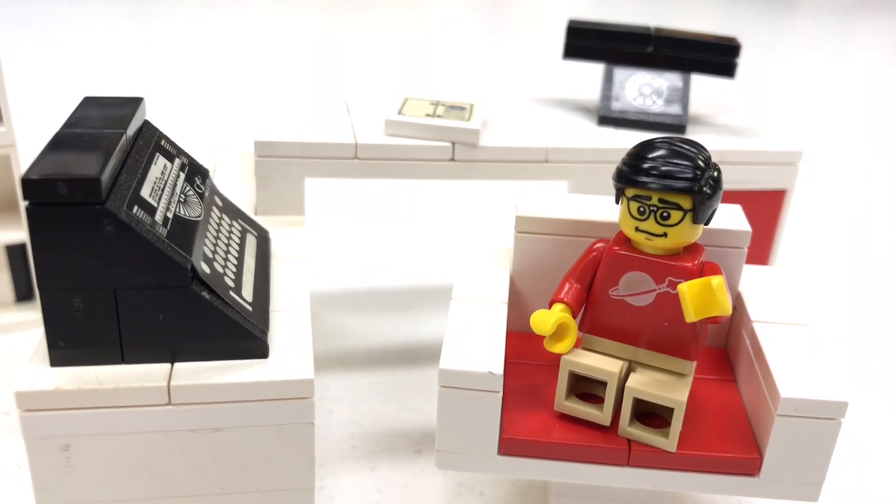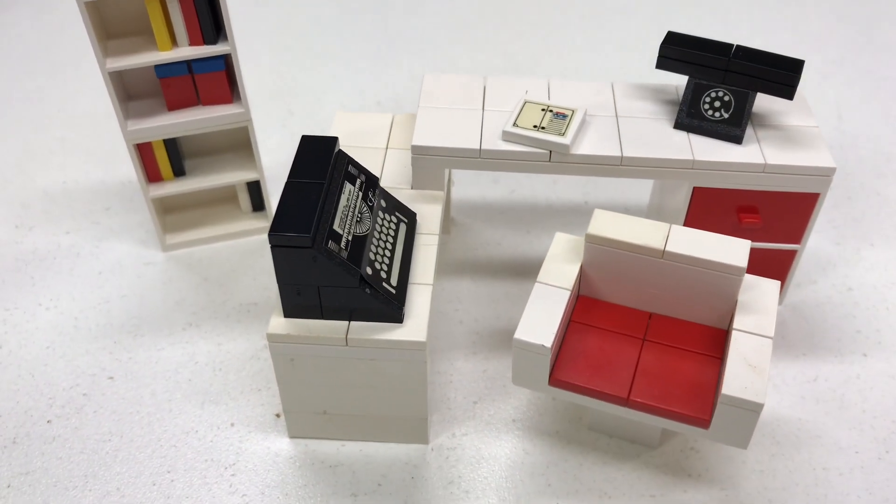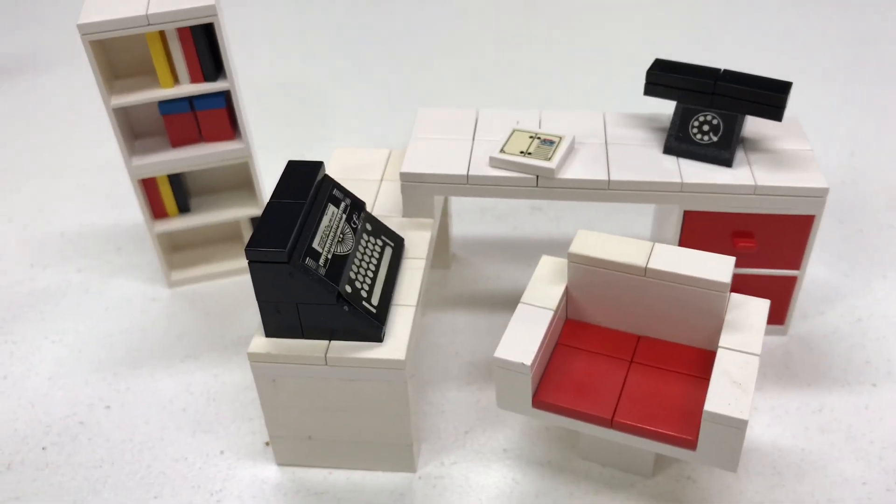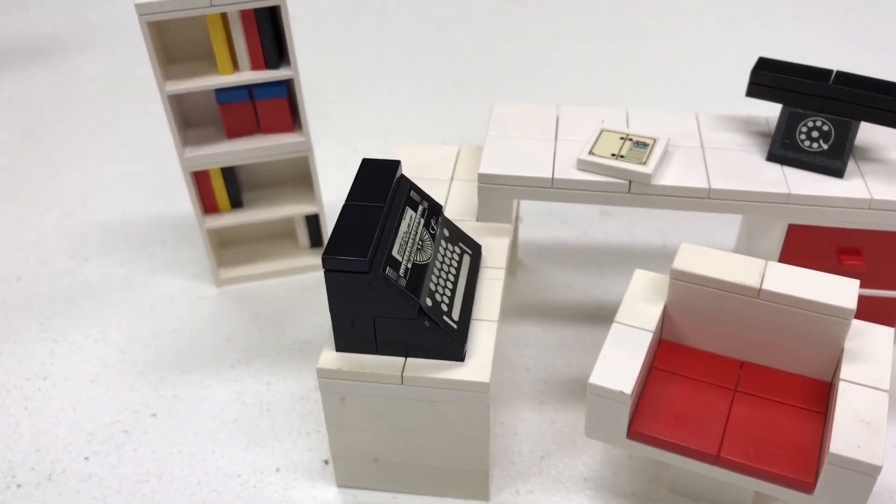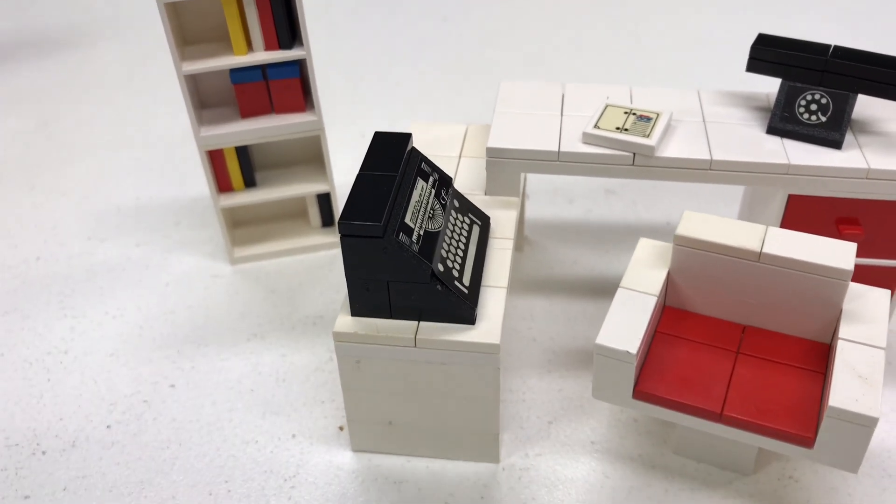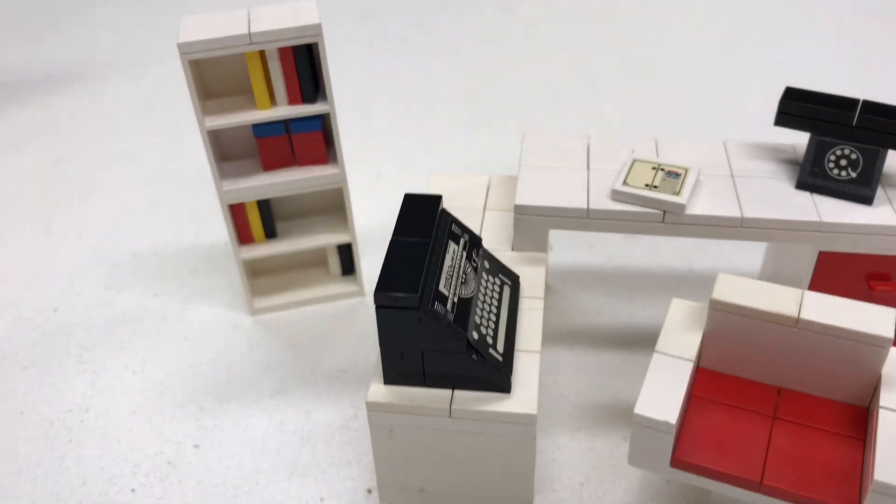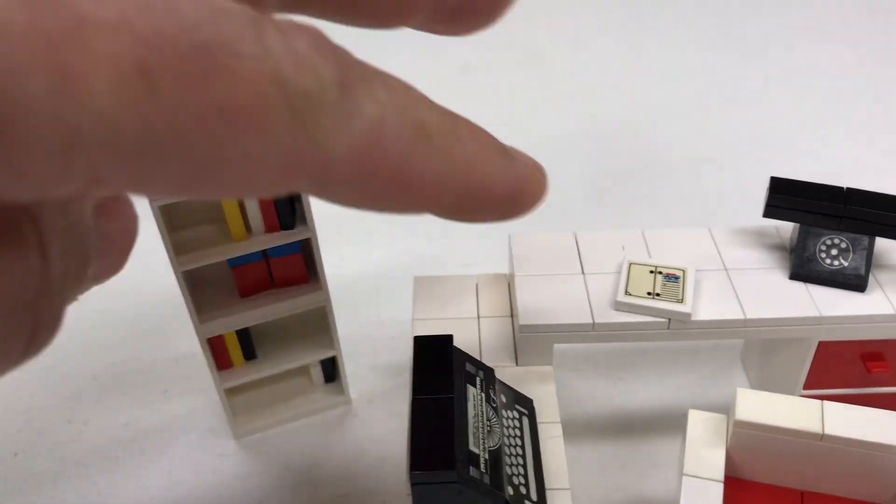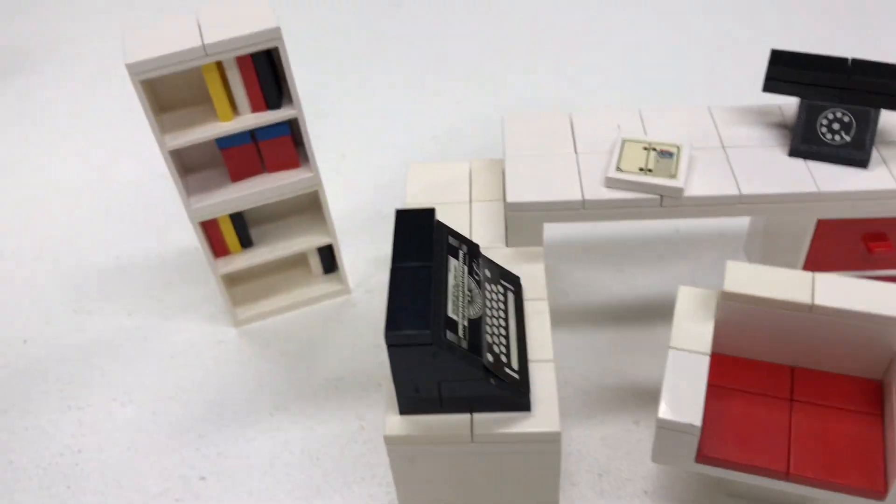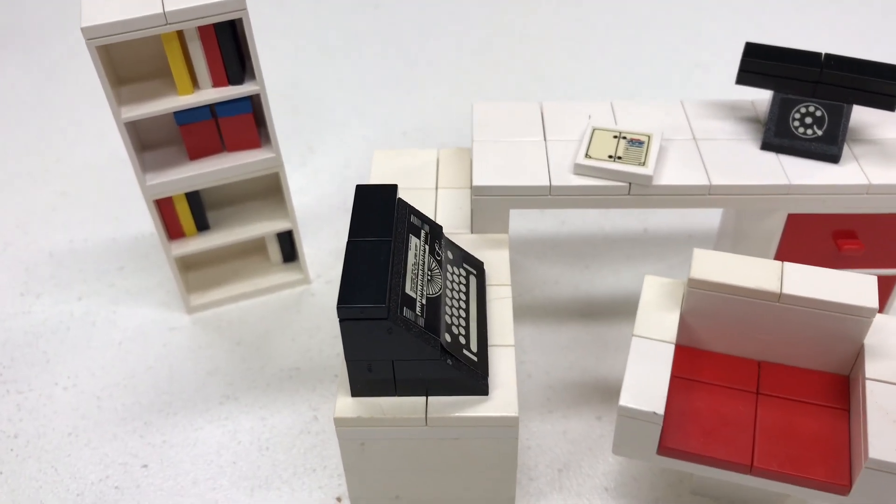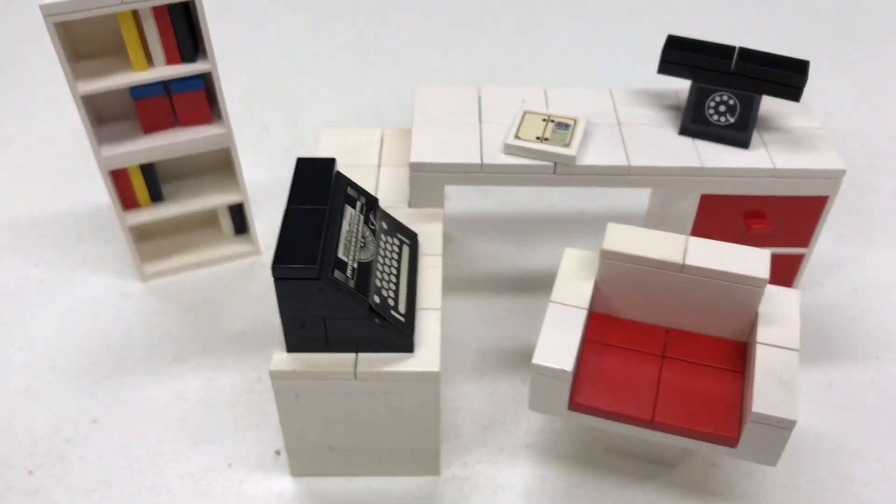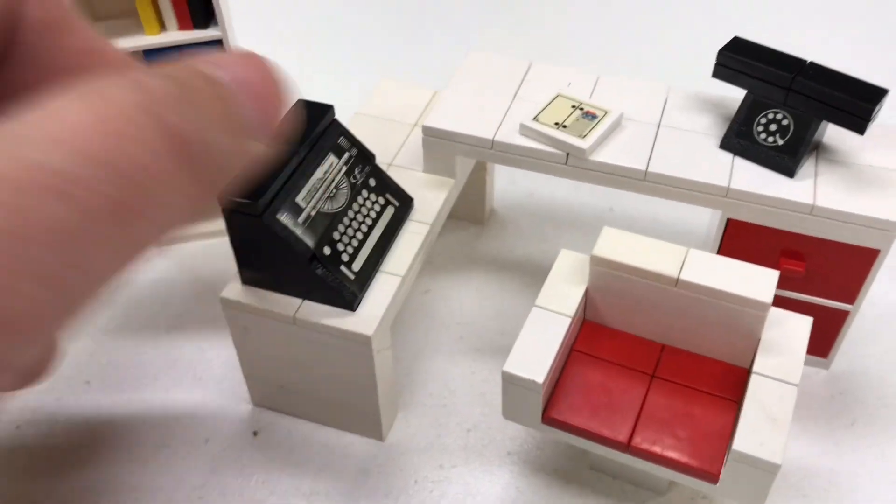And it's not minifigure scale, so let me get the minifigure out of here. One thing about the Homemaker line, the furniture, is they did a lot of studs not on top. Meaning, not that it's built sideways or upside down, but they always had a nice tiled top. Smooth finish, so you don't actually see the studs on top. So that's not technically studs not on top, that's just smooth top I guess. Tell me what the technical term is in the LEGO community.